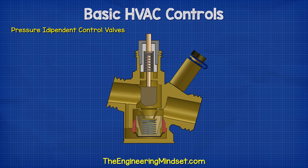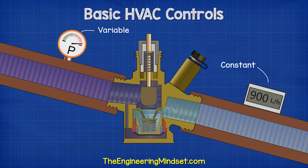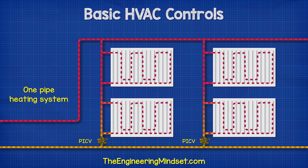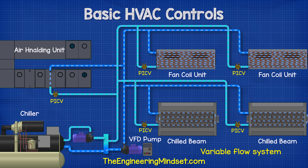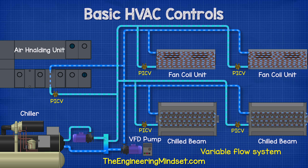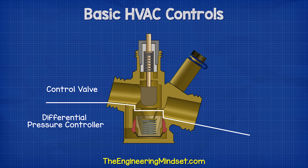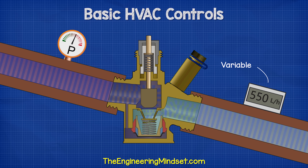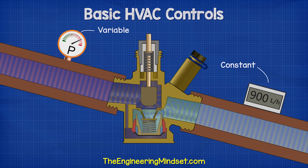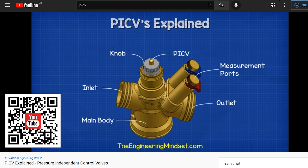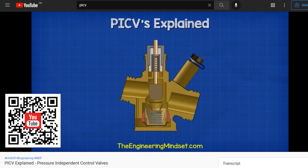Alternatively, we could use pressure-independent control valves. As the name suggests, these valves maintain a constant flow rate through the valve, independent of pressure fluctuations in the system. These are used in heating systems, but also, for example, in a central cooling system in a commercial building to control the flow rate through fan coil units and air-handling units. These are basically multiple valves combined into one design: the lower part maintains a constant pressure difference across the valve, and the upper part regulates the flow rate. We have covered how pressure-independent control valves work in detail previously, and I'll leave a link in the video description below.